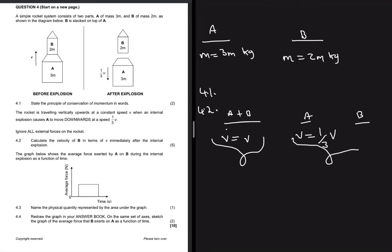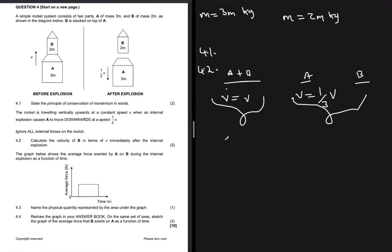Before the explosion we have this, and after the explosion we have this. The momentum before is supposed to equal the momentum after - that's what conservation of momentum states. The question says ignore all forces on the rocket, so the system is closed and the masses are together before.